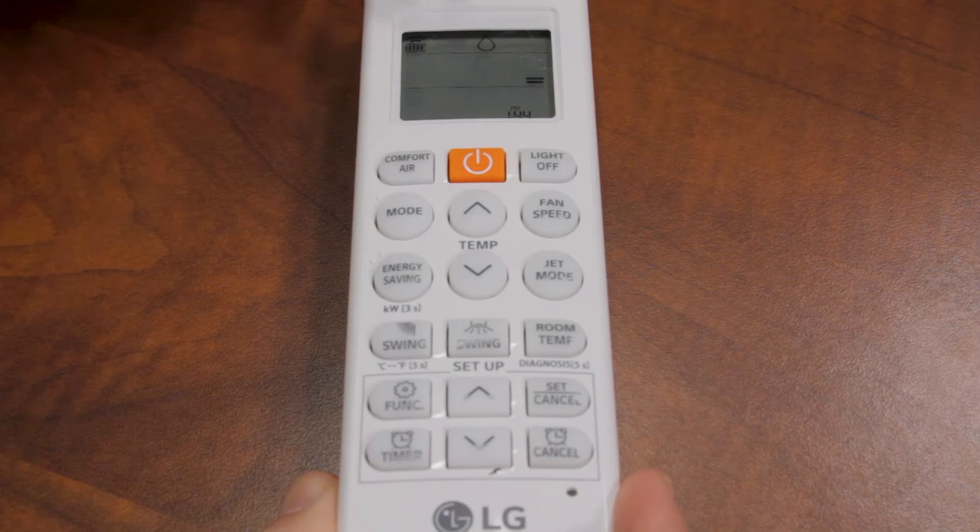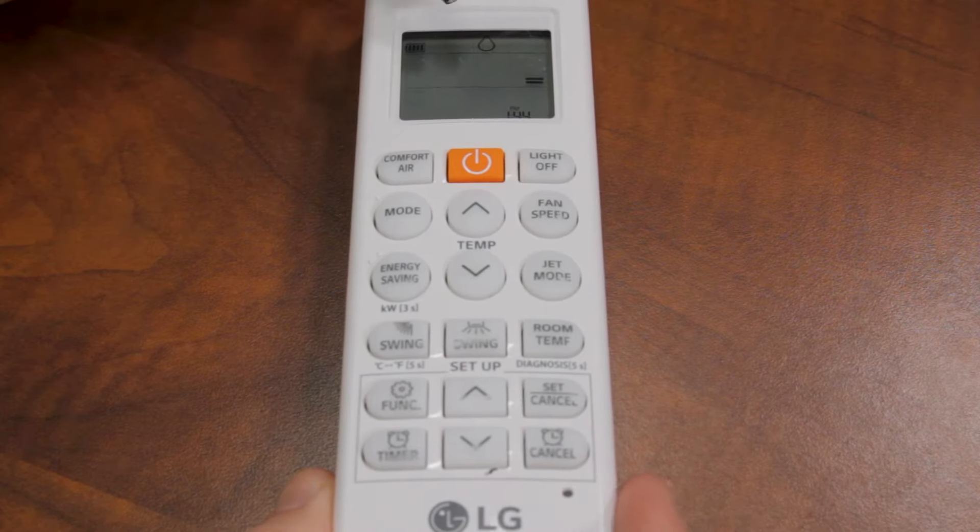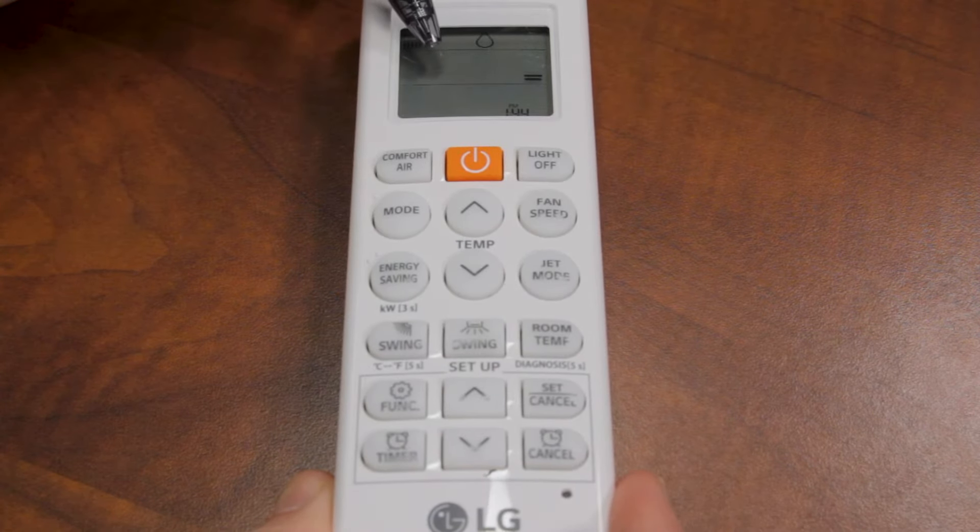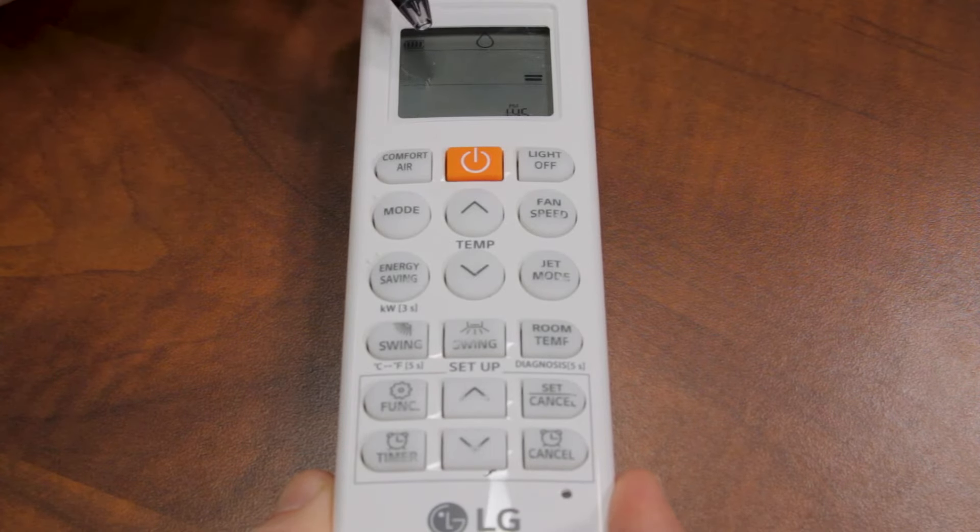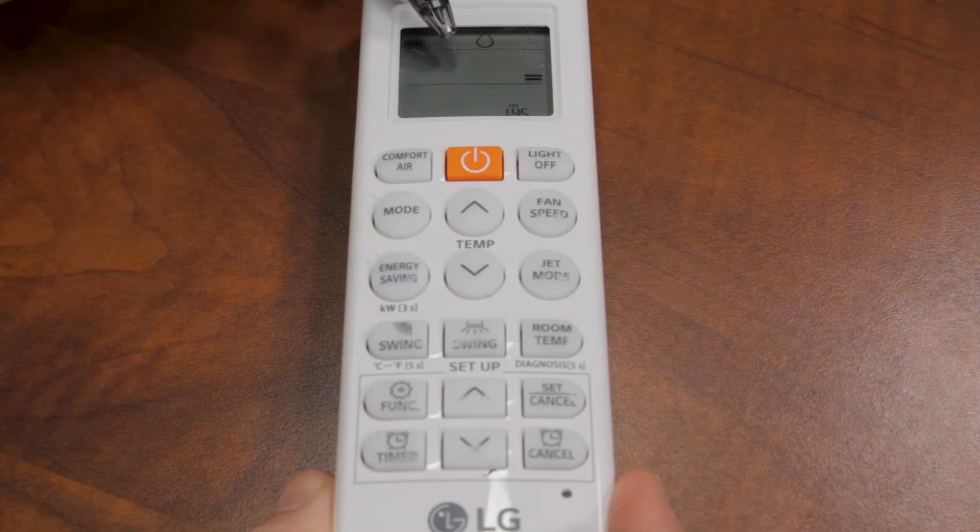Press it again. It's going to go to dehumidification mode. As you can see, the temperature setting went away. In this mode, it's going to be switching between cooling and fan only, pulling moisture out of the room and blowing cool dry air.